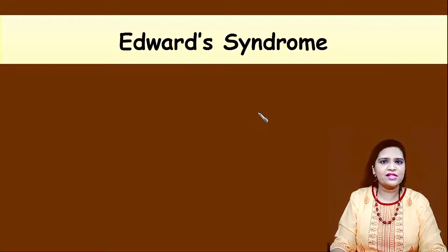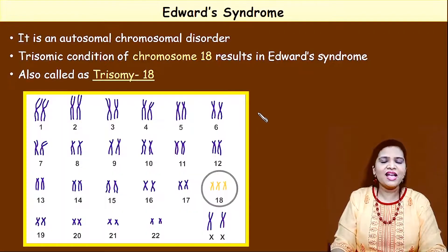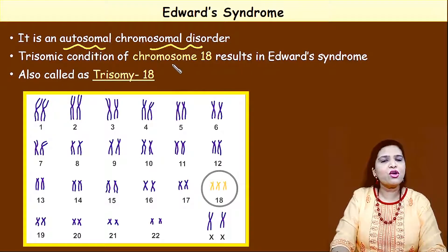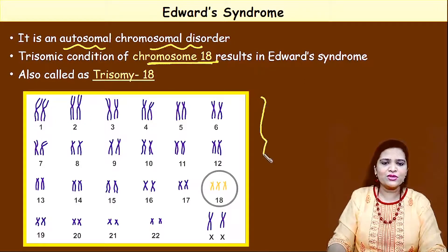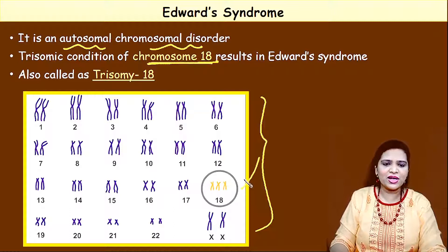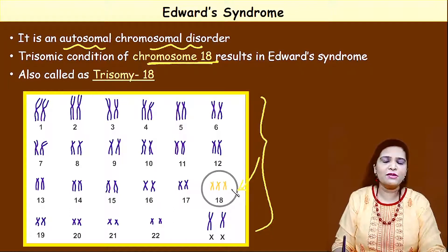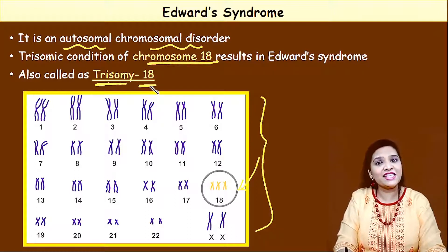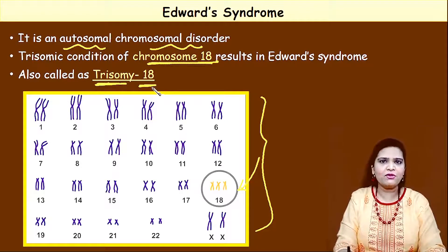Let's move on to the third example — Edwards syndrome. This is also an autosomal chromosomal disorder due to an extra copy of chromosome number 18. Looking at the karyotype at chromosome number 18, there is one more copy of the chromosome. This is trisomy at chromosome number 18, so we call Edwards syndrome trisomy 18.